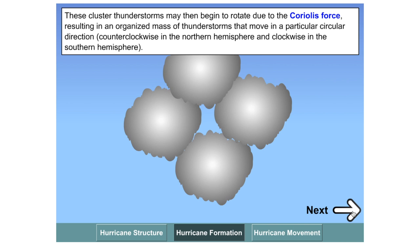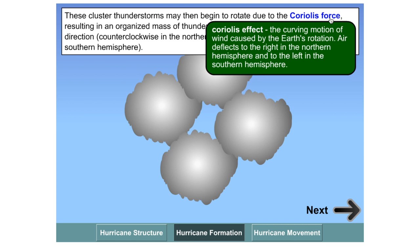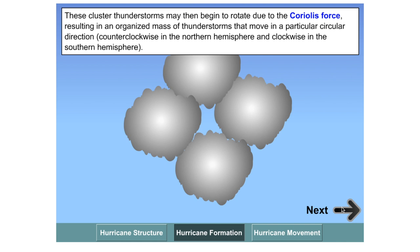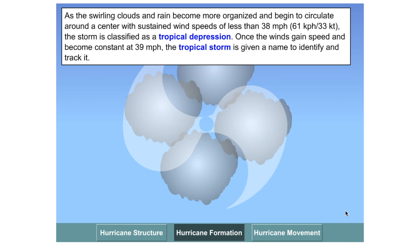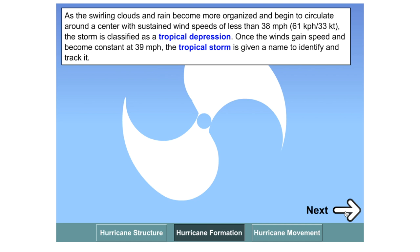These thunderstorms may then begin to rotate due to the Coriolis force of our planet, and they result in organized masses of thunderclouds that move in a circular motion. Depending on the hemisphere, they'll move in different directions. For those of you who aren't aware, the Coriolis force is a curving motion of the wind caused by the Earth's rotation. Air is deflected to the right in the northern hemisphere and to the left in the southern hemisphere. These swirling clouds become more organized as they begin to circulate around the center of the storm. They're known as a tropical depression when wind speeds are less than about 38 miles per hour, which is approximately 61 kilometers an hour.